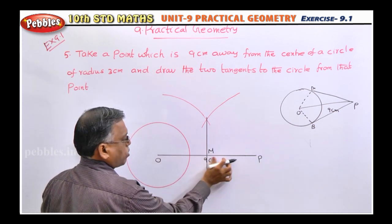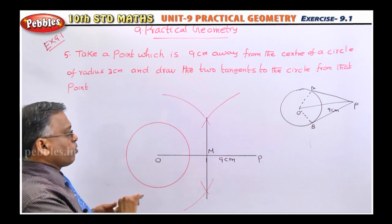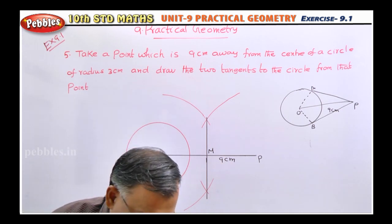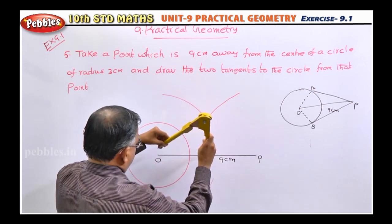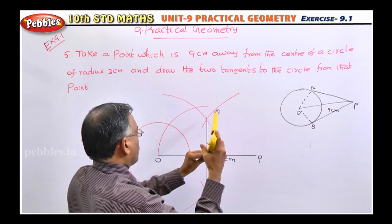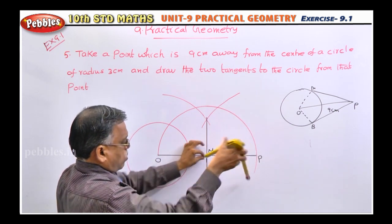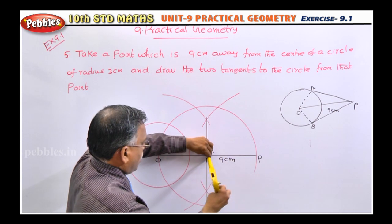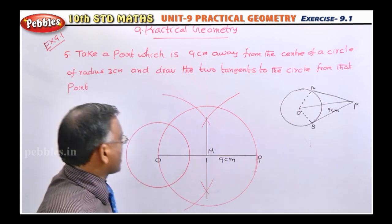This is our perpendicular bisector, and this midpoint is called M. So this length OP is 9 centimeters. Once you draw the perpendicular bisector, then with M as center and MO as radius, you should draw another circle. With M as center and MO as radius, you draw this larger circle, and it will cut the previous circle.